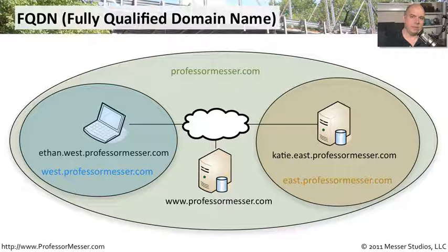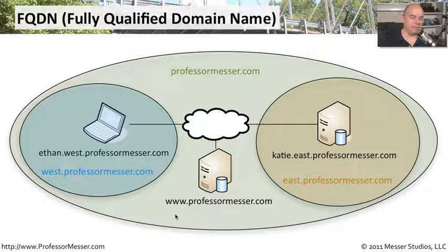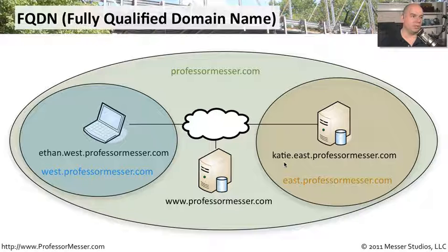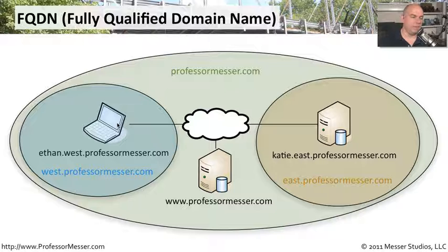If we view the professormesser.com domain in graphical form, a large circle on the outside represents professormesser.com. Inside that, there's a fully qualified domain name for the web server: www.professormesser.com. The server itself might just be called 'www,' but because it's in the professormesser.com domain, the fully qualified domain name combines all of those together. Similarly, the east.professormesser.com domain contains katie.east.professormesser.com, and the west.professormesser.com domain contains ethan.west.professormesser.com.